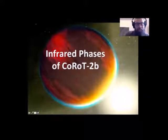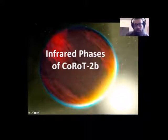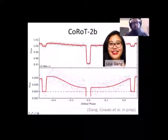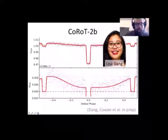I've kind of set this up for a weird outlier case. These are infrared phase curves of CoRoT-2b—yet another hot Jupiter discovered by the French satellite CoRoT. This is work that my master's student Lisa Dang has been doing.